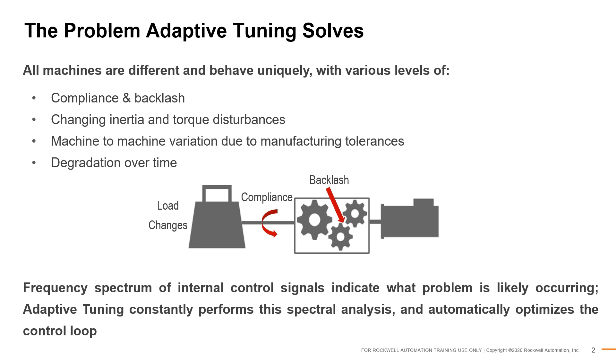With all the possible variations, the optimal tuning configuration can vary drastically across different loads, machines, and plants. Adaptive Tuning has been created to simplify the tuning process and to minimize the amount of effort required by the system configurator to get an application up and running. It works by continuously monitoring the frequency spectrum of internal control signals and automatically executes tuning actions to optimize the control loop.